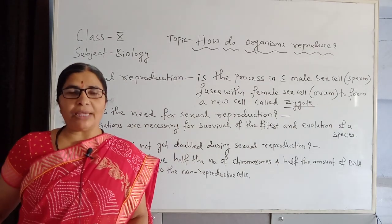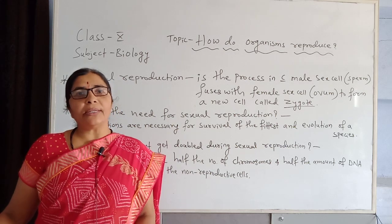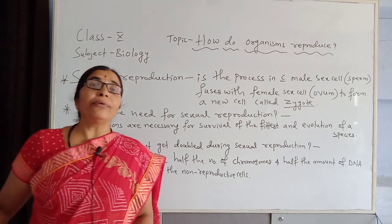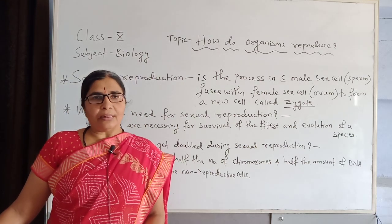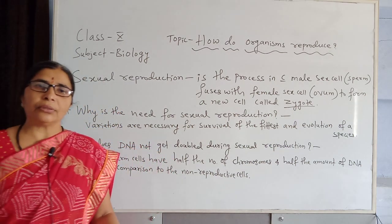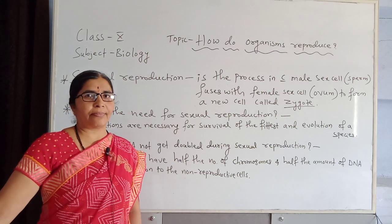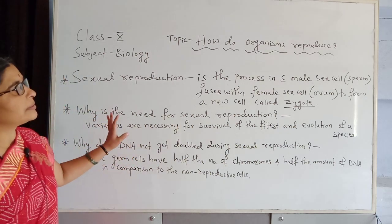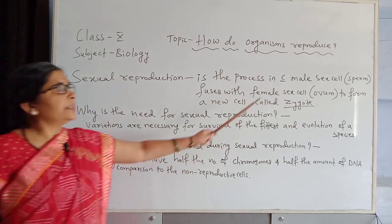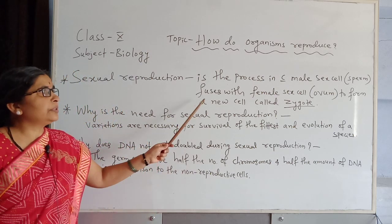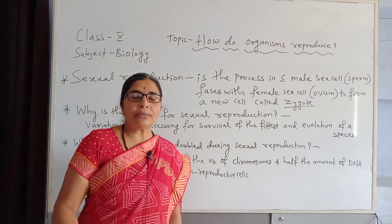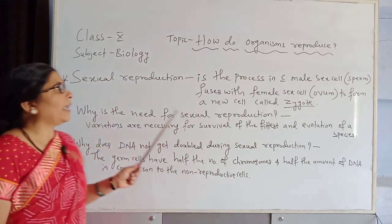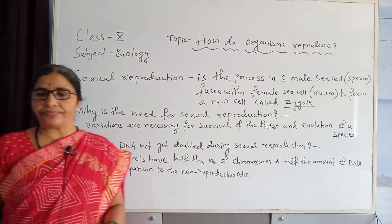Class 10th, subject Biology, topic: How do organisms reproduce. In the previous session we learned about asexual mode of reproduction. Today we learn about sexual mode of reproduction. Sexual reproduction is a process in which a male germ cell, that is the sperm, fuses with a female sex cell known as ovum to form a new cell known as zygote. That is the sexual mode of reproduction.